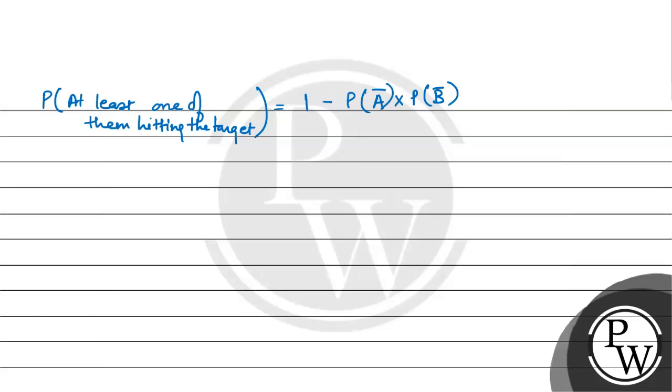This is going to be 1 minus 1 by 5 and 1 by 3. So this is 1 minus 1 by 15, which is equal to 14 by 15.